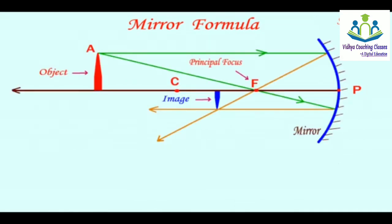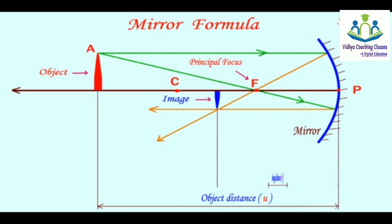The most important one of this chapter is the mirror formula. The mirror formula is on the screen where we take the measurement. Object distance will be measured from object to pole. From pole to object distance, we will denote U.